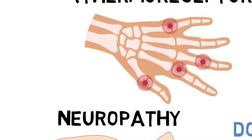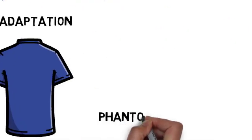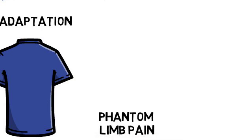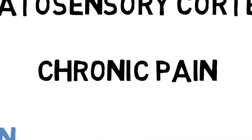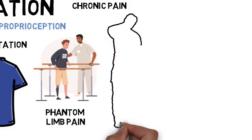In phantom limb pain, pain is perceived in a limb that has been amputated. In chronic pain, there's persistent pain that lasts longer than the usual recovery period.